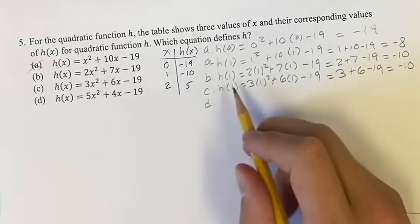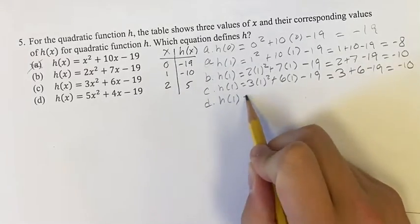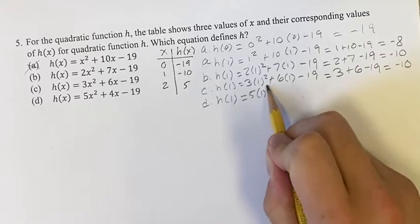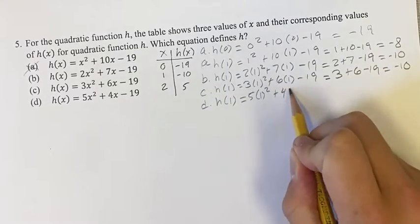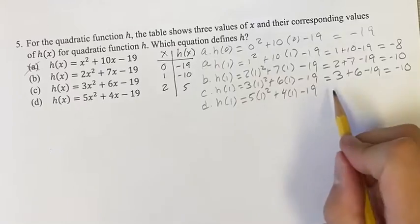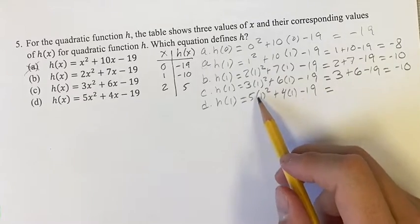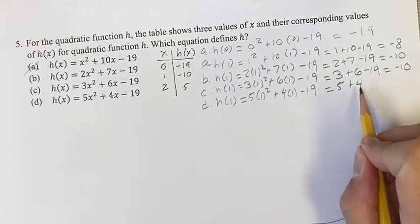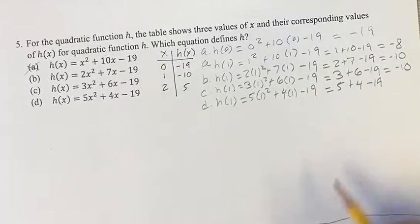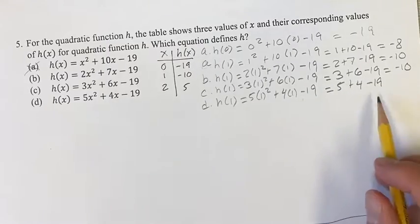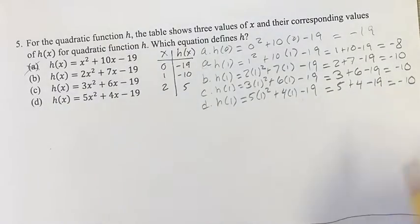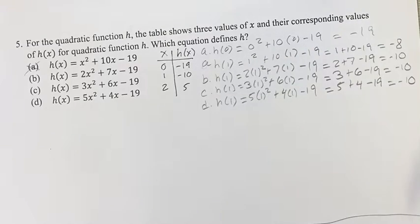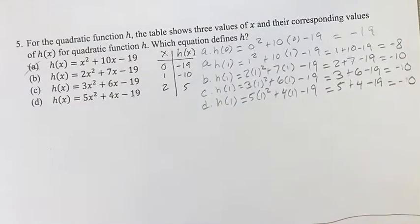Our last option, d. h(1) equals 5(1²) + 4(1) - 19. That's going to look like 5 times 1 is 5, plus 4 times 1 is 4, minus 19. You're starting to see a pattern here. 5 + 4 = 9, minus 19 is again -10. So h(0) works for b, c, and d. h(1) works for b, c, and d. And all we have left is h(2). So hopefully, if this is a good problem, only one of these is going to work.